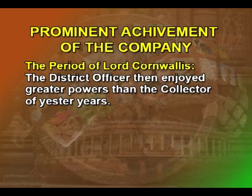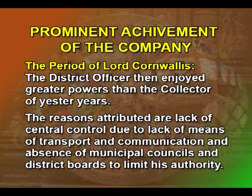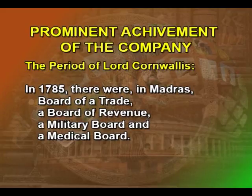He also separated the customs from the revenue department. Another notable aspect is that the district officer then enjoyed greater powers than the collector of later eras. The reasons attributed are lack of central control due to lack of means of transport and communication, and absence of municipal councils and district boards to limit his authority. During the times of Hastings and Cornwallis, boards were set up for the administration of different departments in Calcutta and Madras. In 1785, there were in Madras a Board of Trade, a Board of Revenue, a Military Board, and a Medical Board, composed of members of the council and other officials.